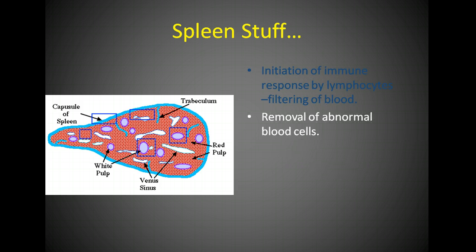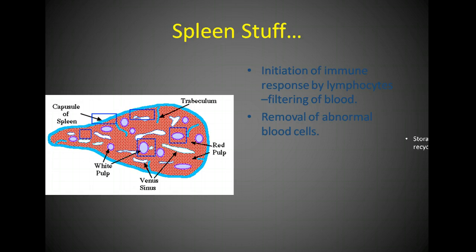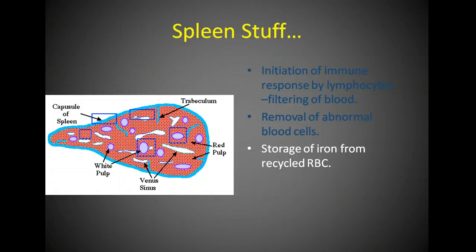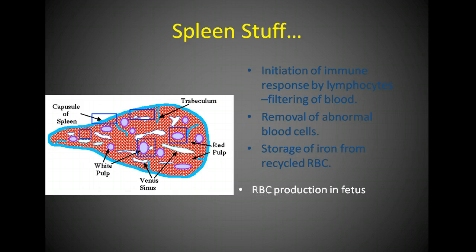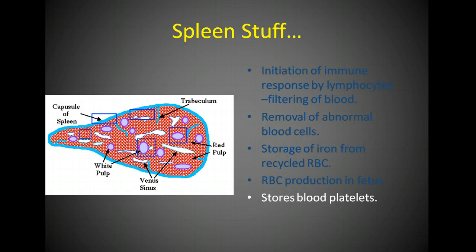The spleen removes abnormal blood cells. It's involved in the recycling of blood cells and it's a storage area for iron from the recycled blood cells — most of the iron from red blood cells is actually recycled as red blood cells are destroyed. It's also involved with red blood cell production in the fetus, and it stores blood platelets, which are involved with blood clotting.